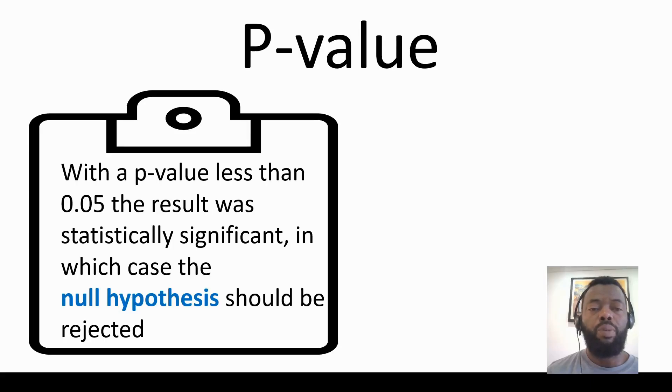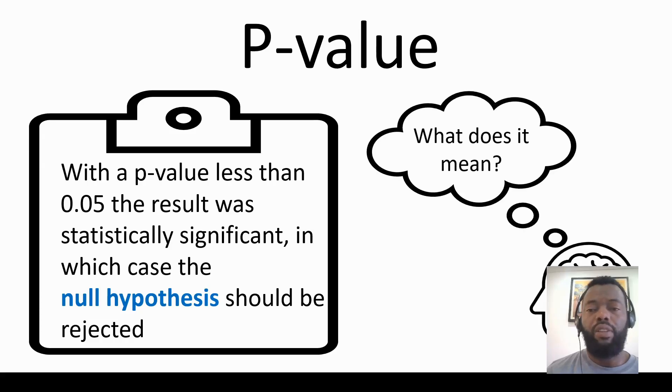You probably heard that with a p-value less than 0.05, the result was statistically significant, in which case the null hypothesis should be rejected. So what does it mean? Let's begin by coming up with an example.